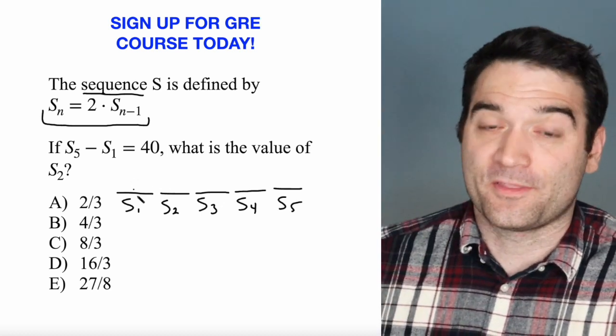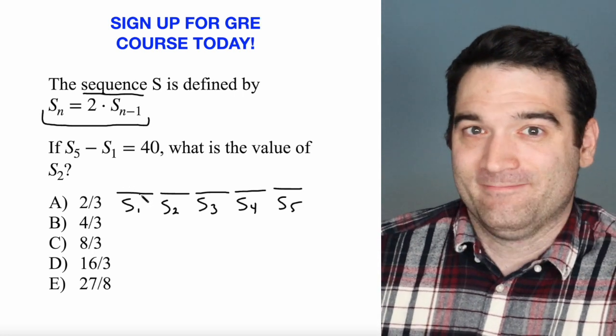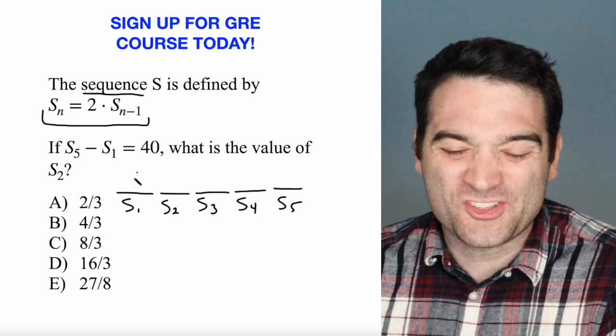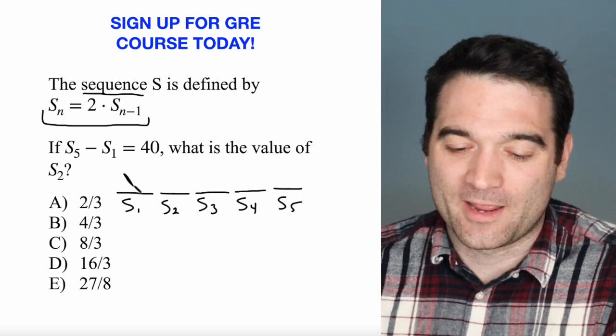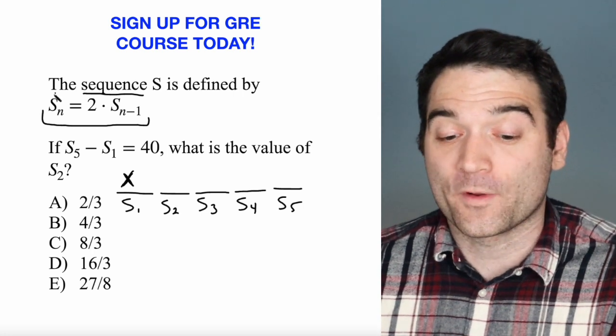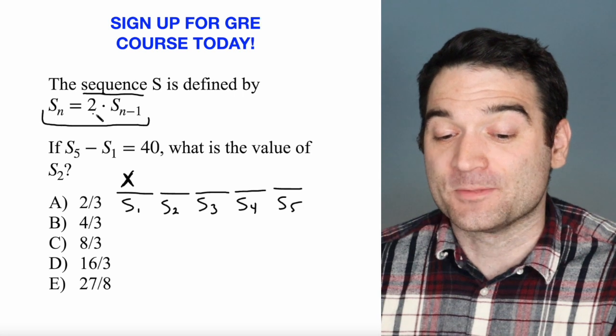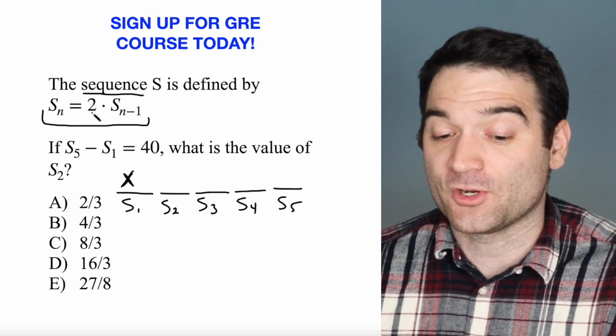Now, I don't know what the first term is. It could be 1, 2, 3, a billion. I have no idea. So let's just call it X. That's a pretty creative name for it. We'll call the first term X. Well, how do we find the second term? According to our algorithm up here, what we need to do to find the next term is multiply the previous term by 2.